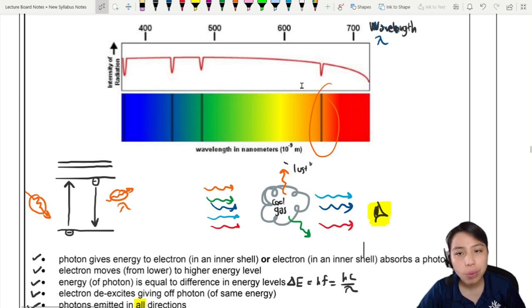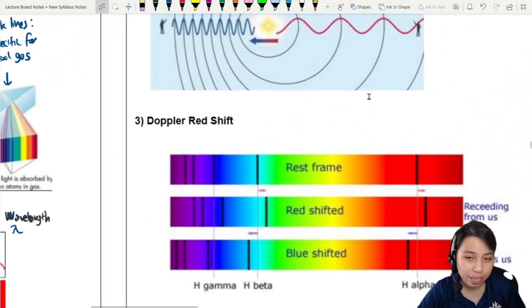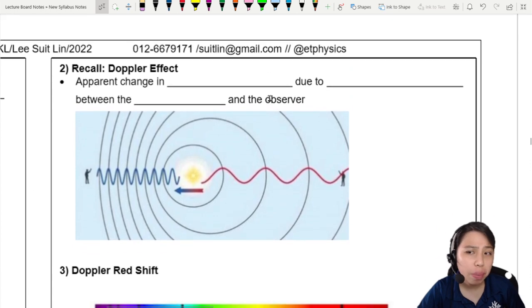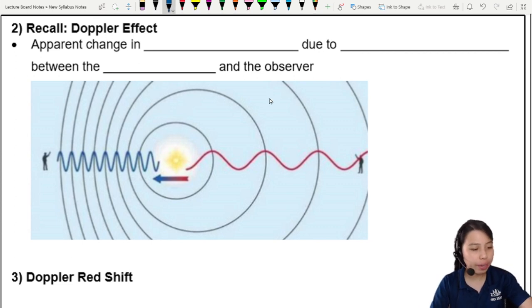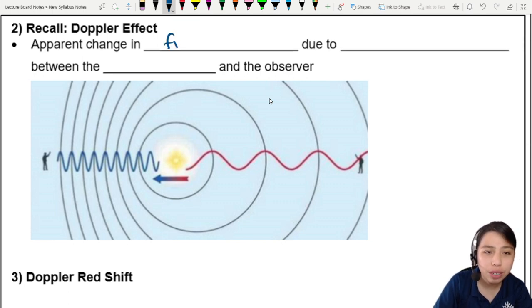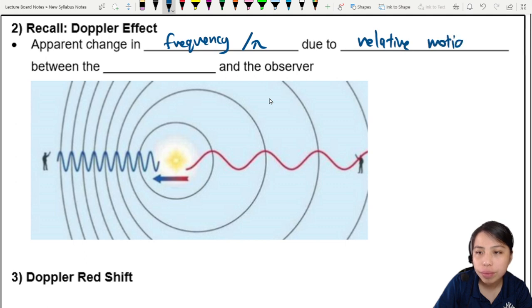There's one more thing you need to recap. We know that we'll see dark lines. But we discovered there's this thing called the Doppler effect, and all wavelengths can shift around depending on how fast the object is moving. A quick recap on what Doppler effect is. This is from our AS chapter. Doppler effect is the apparent change in frequency or wavelength due to relative motion between the source and the observer.